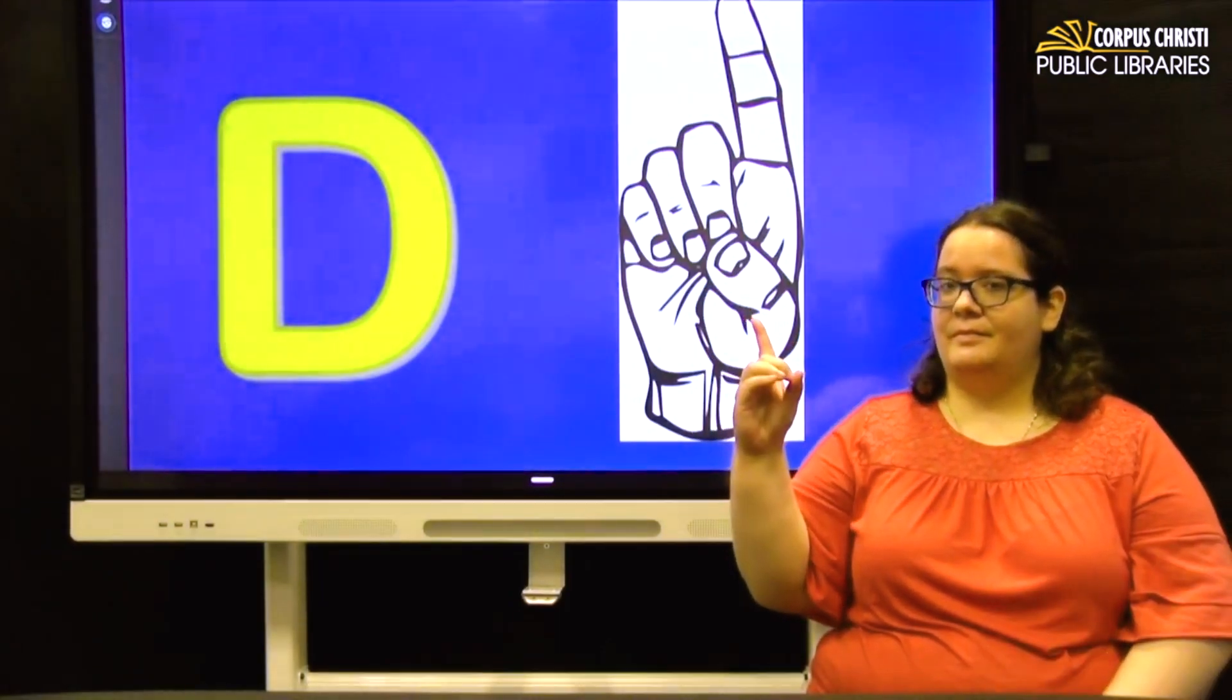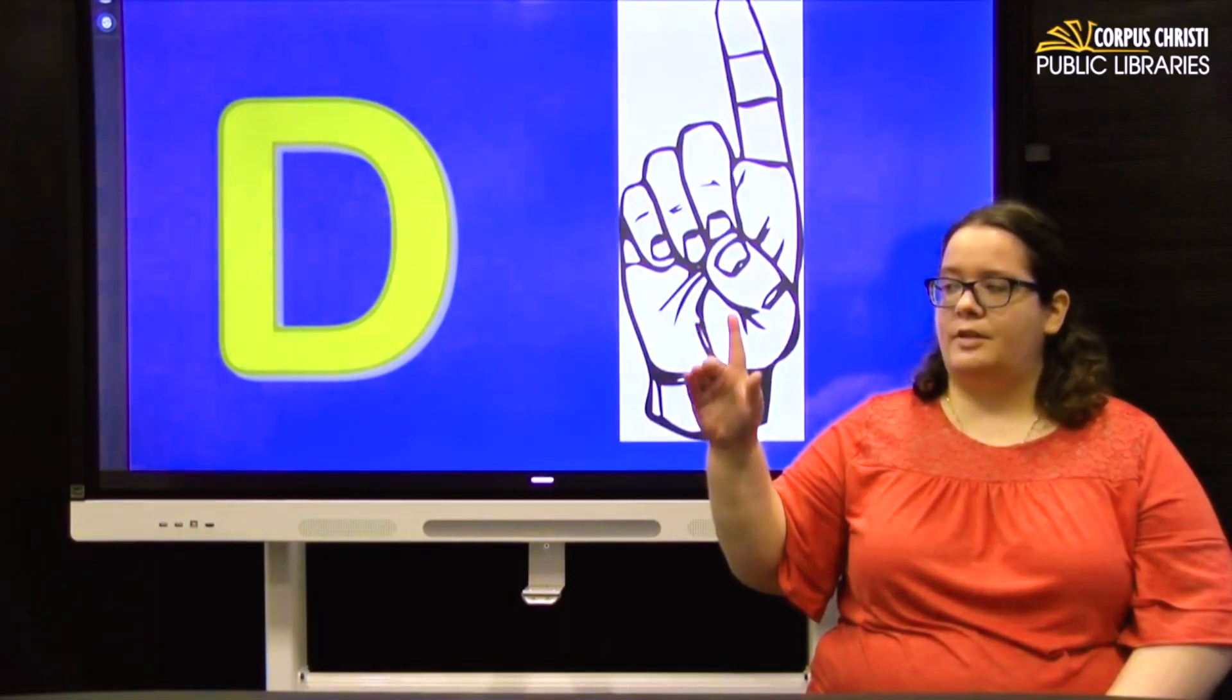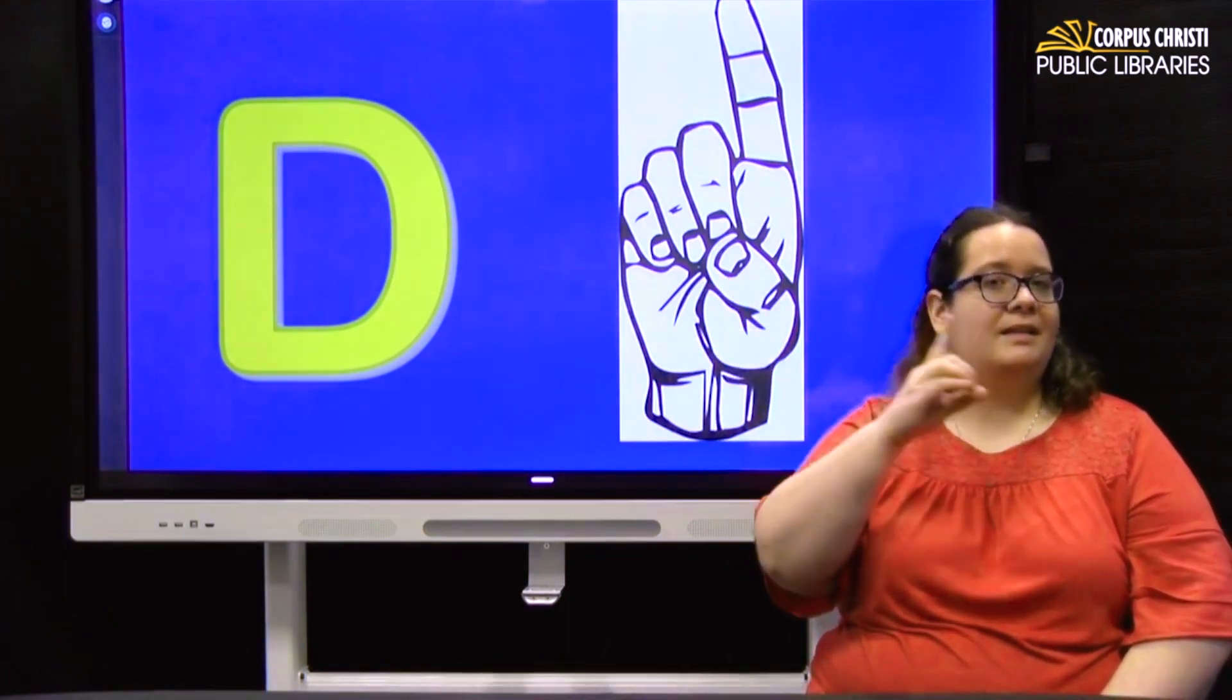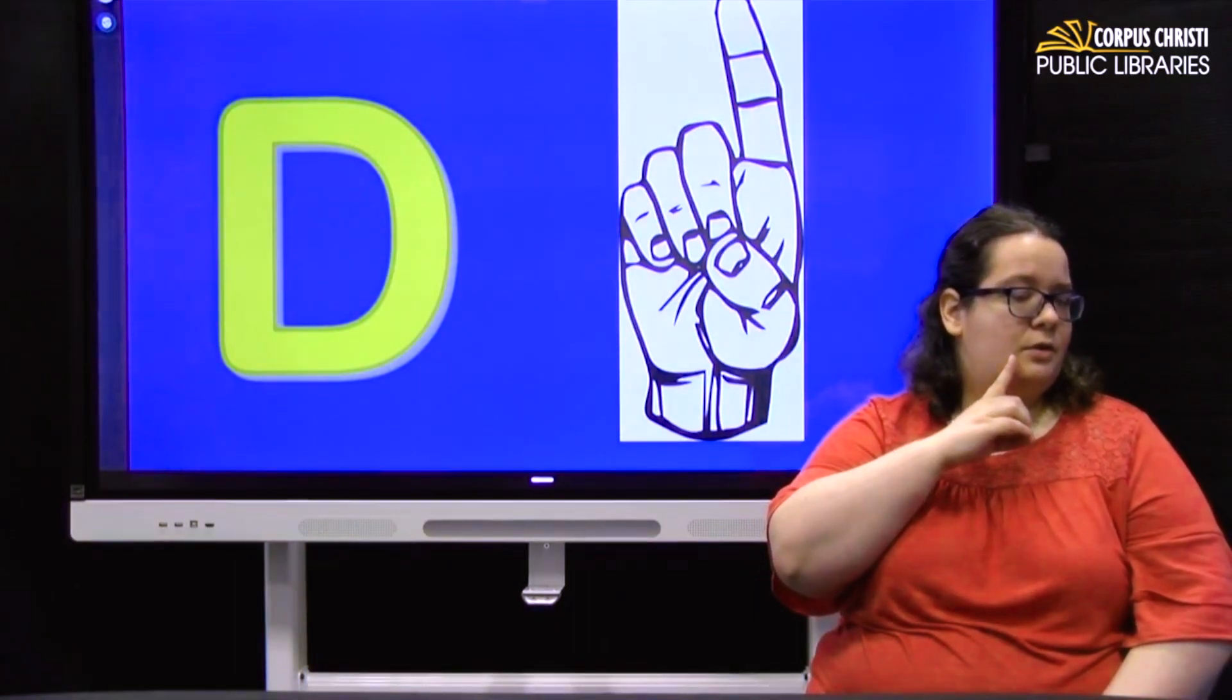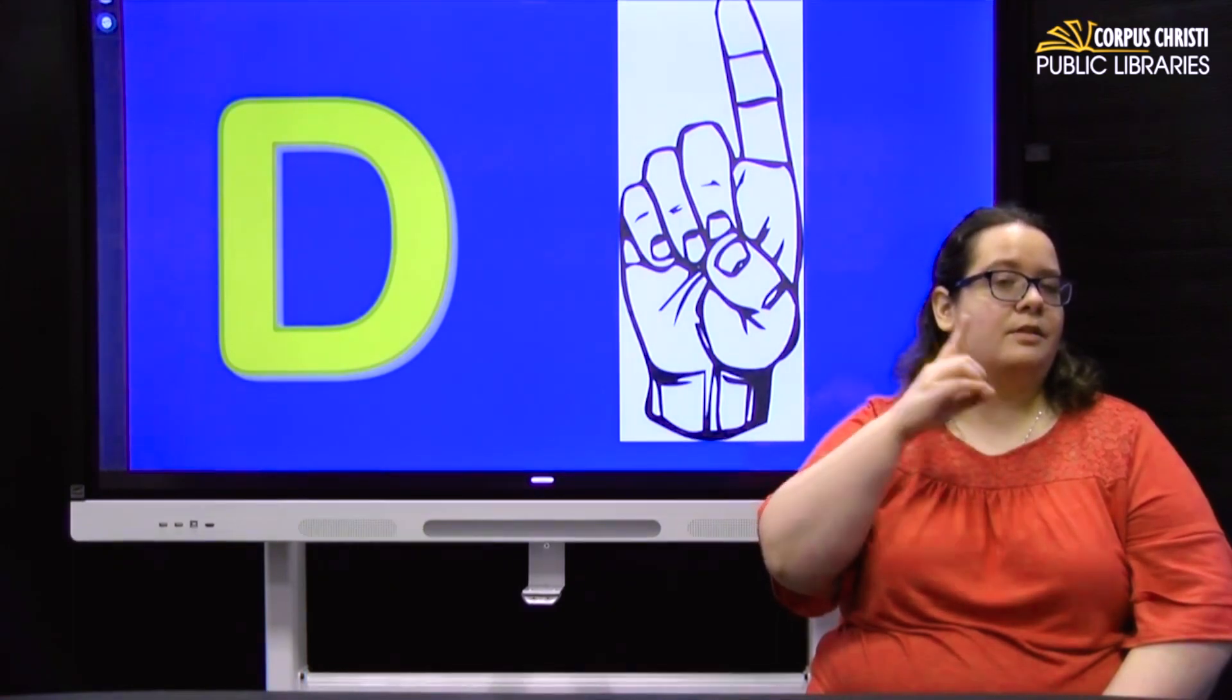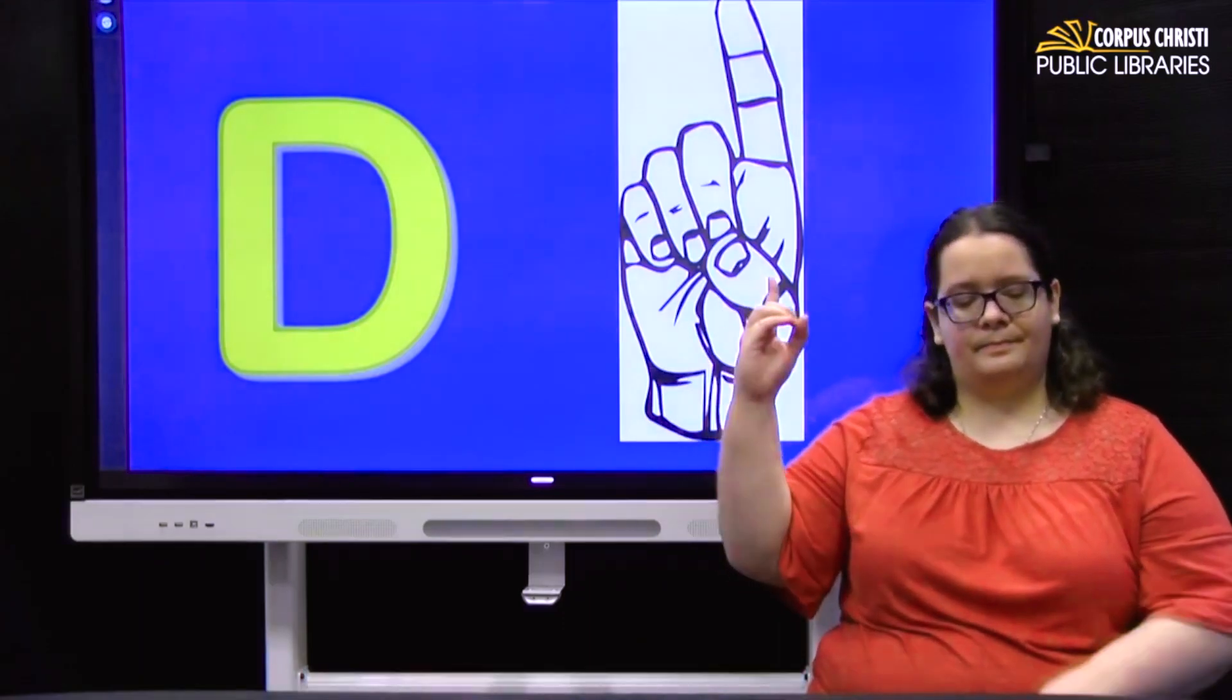D. Again, that is a fairly simple one. We just make a circle with our thumb and our three fingers here. Let your index finger point straight up. D. And use this for deaf. Just tap your chin or close to the corner of your mouth and then back towards your ear. Deaf. You'll also see some people go from ear to chin. So whichever direction, it's still the same sign. D.